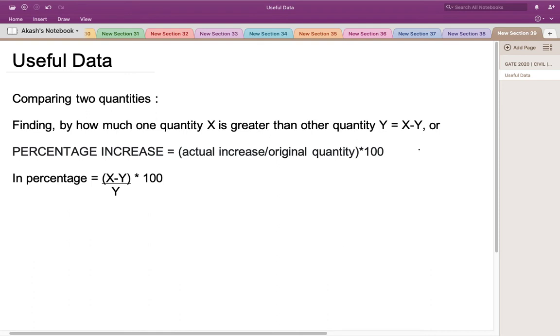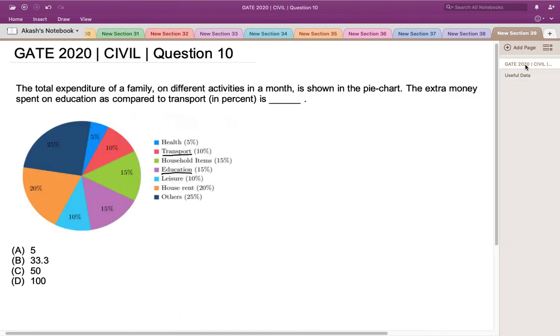Let's use this concept and solve the question. We have to compare the extra money spent on education as compared to transport. Here we can see that a total of 15% of the total expenditure has been spent on education, and a total of 10% of the total expenditure has been spent on transport.